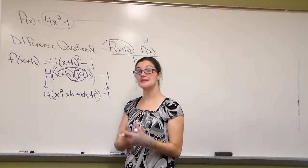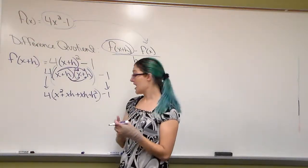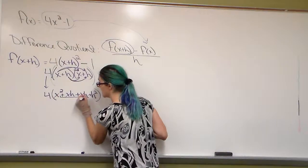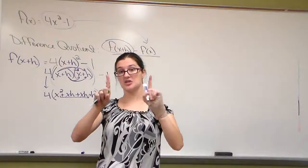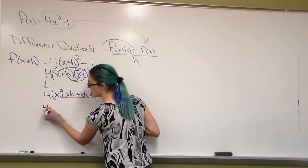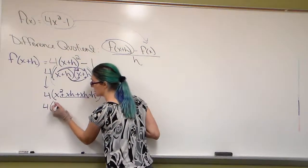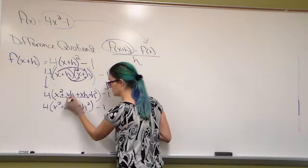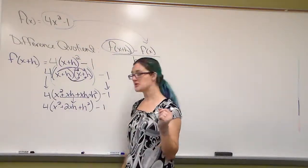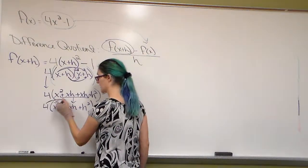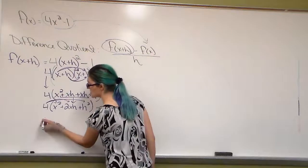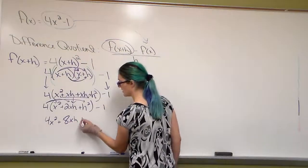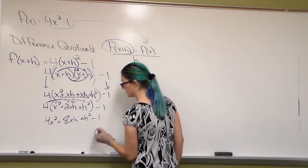Now, you can distribute here or you can take an extra step and combine like terms. I'm a fan of doing less work, so I'm going to add rather than multiply. I'm going to combine these — if I have one xh and I'm getting another xh, I have two xh's total. You cannot change exponents when you're adding or subtracting, only when you multiply or divide. So we have 4x squared plus 8xh plus h squared minus 1, just falls. I cannot combine terms anymore — this is f of x plus h.